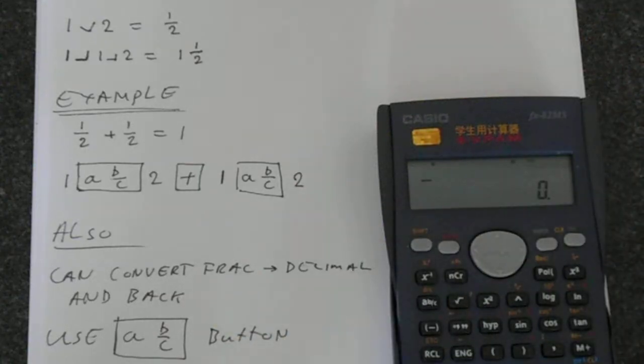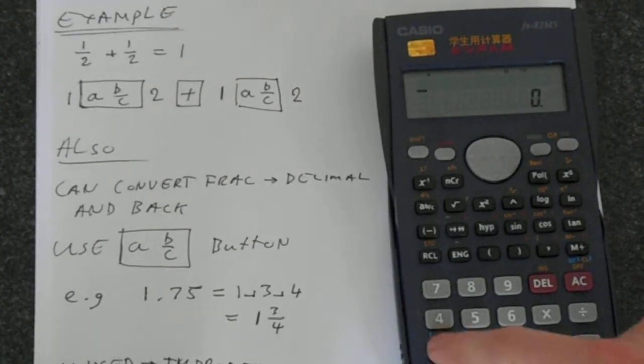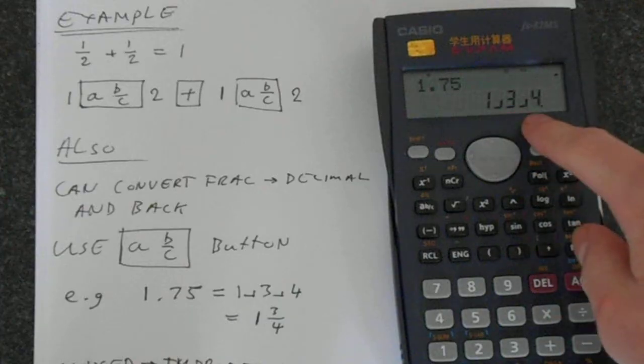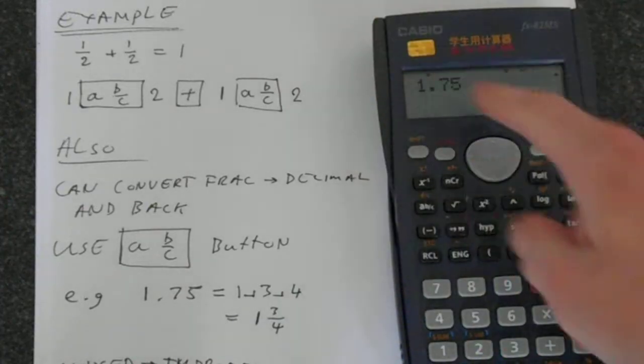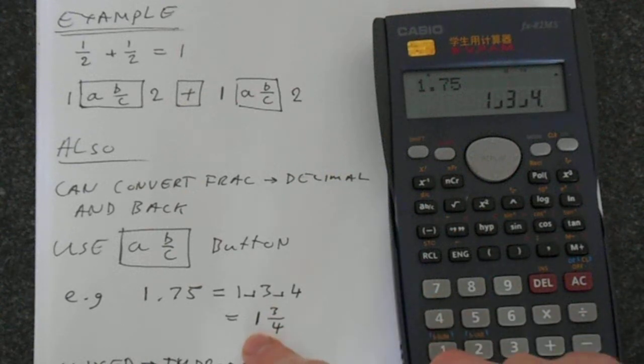It works in exactly the opposite way. So say you've got 1.75 - put 1.75 equals. Then if you press this A B over C button, we get this here, which if you've followed before, you should know that's 1 and 3 quarters.